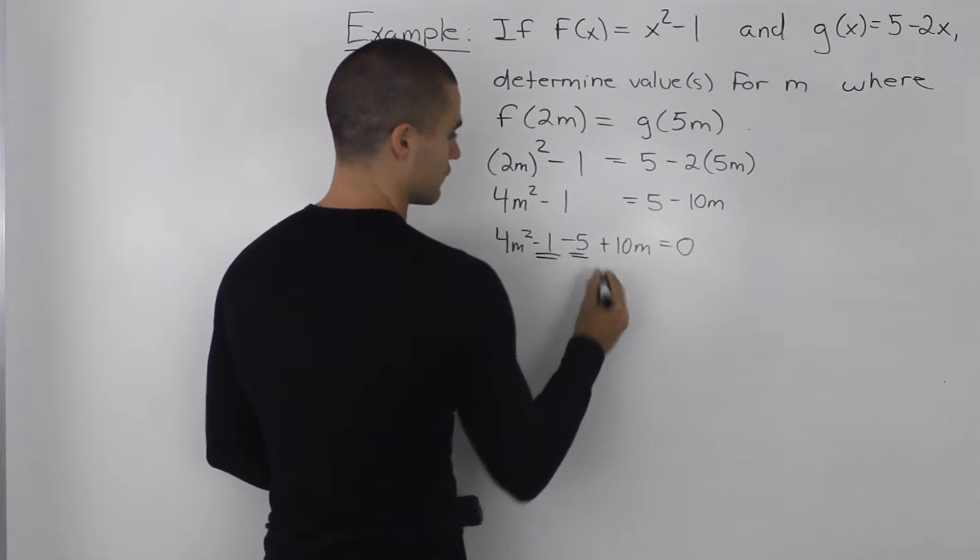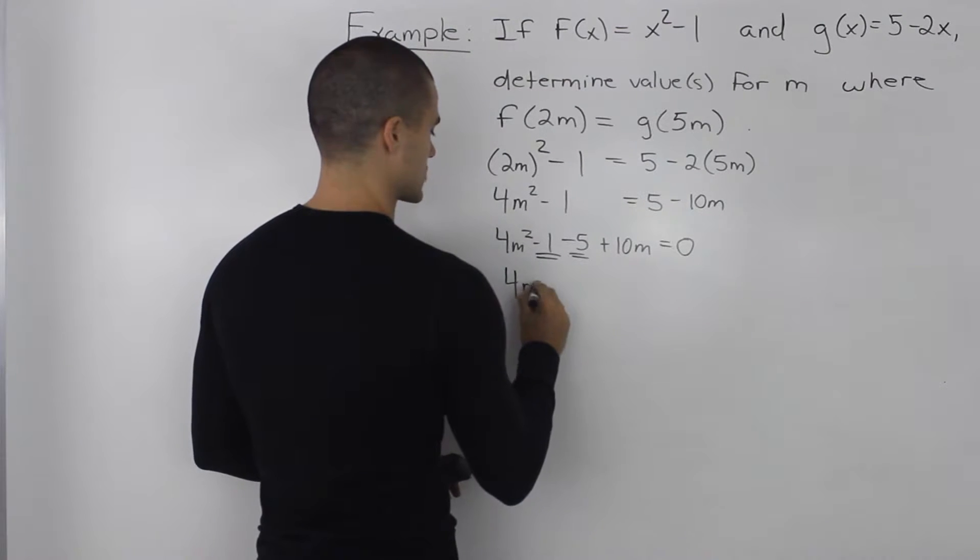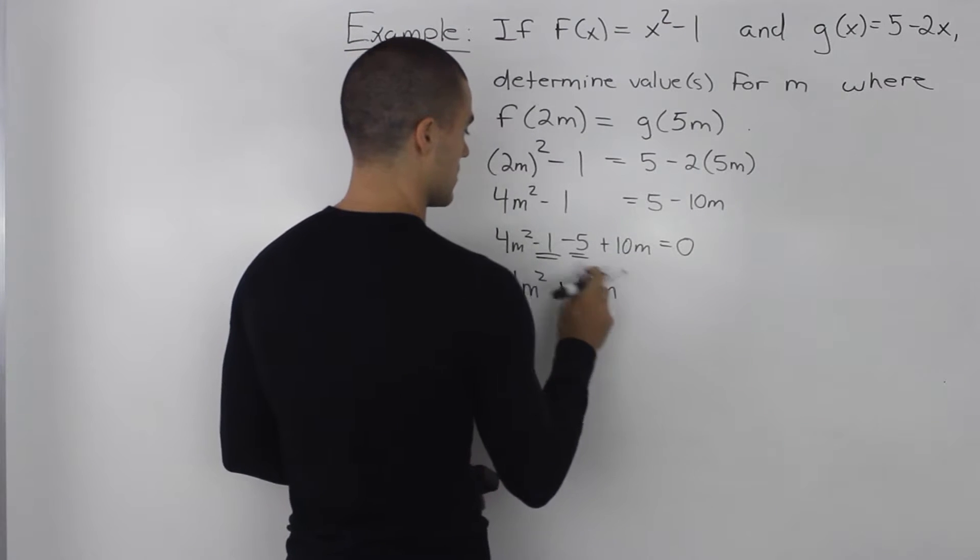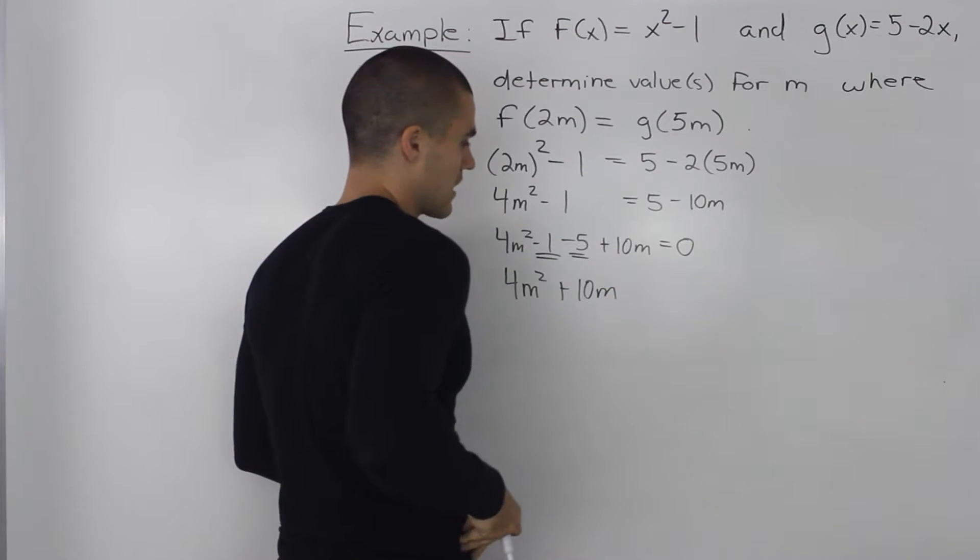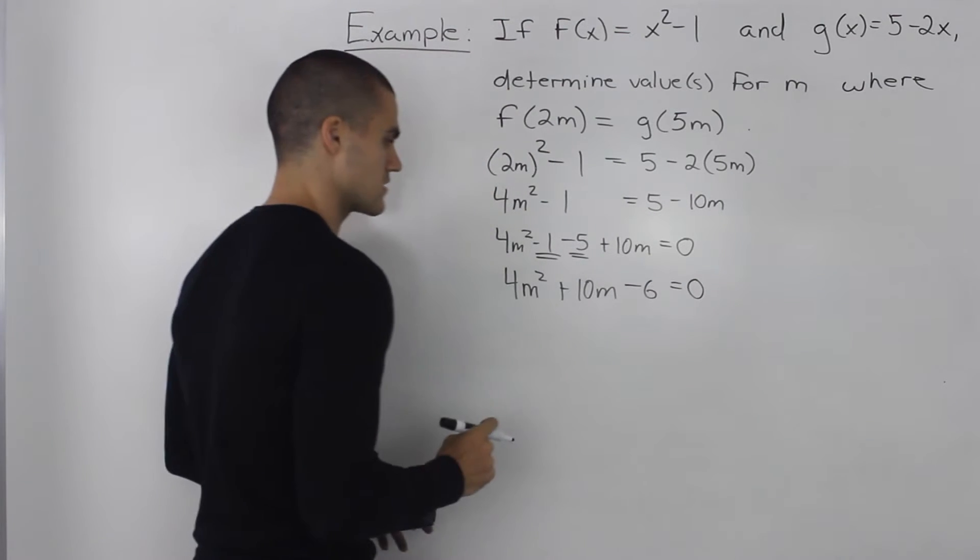Notice how this negative 1 and negative 5, they are like terms. So 4m squared, let's put this 10m here, negative 1 minus 5 is negative 6, and that's all equal to 0.